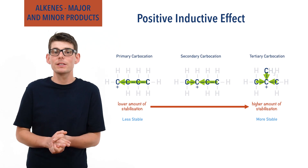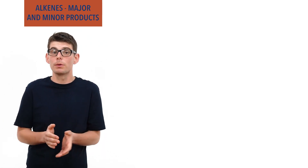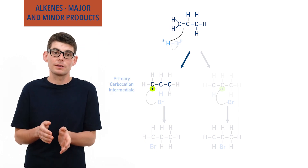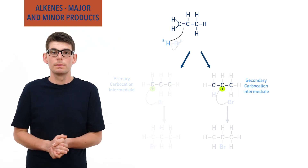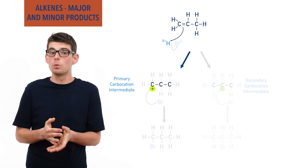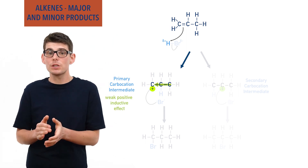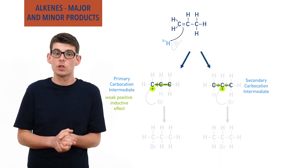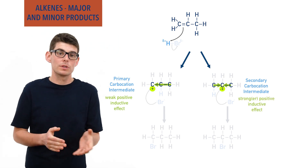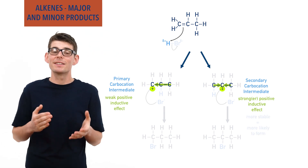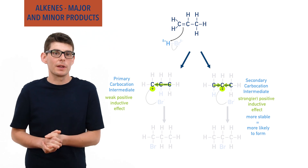This positive inductive effect explains why more 2-bromopropane is formed than 1-bromopropane in our example. If the hydrogen bonds to carbon 2 in the first step of the mechanism, a primary carbocation intermediate is formed. If the hydrogen bonds to carbon 1, a secondary carbocation intermediate is formed. In the primary carbocation, there is only one carbon group bonded to the positively charged carbon, giving a low amount of positive inductive effect. In the secondary carbocation, there are two carbon groups bonded to the positively charged carbon, giving more positive inductive effect and making the secondary carbocation intermediate more stable. If something is more stable in chemistry, it takes less energy to form, and therefore the secondary carbocation is easier and more likely to form than the primary carbocation intermediate.